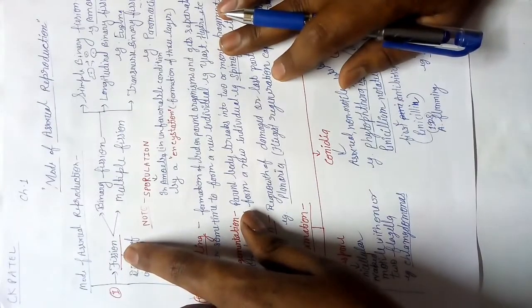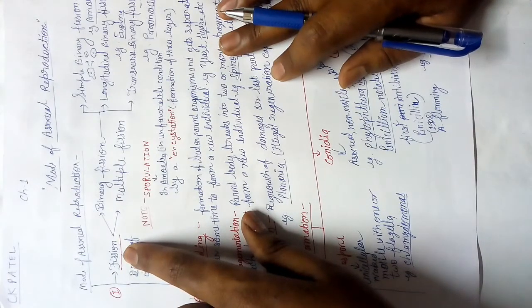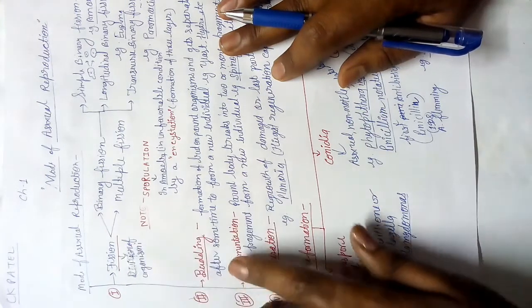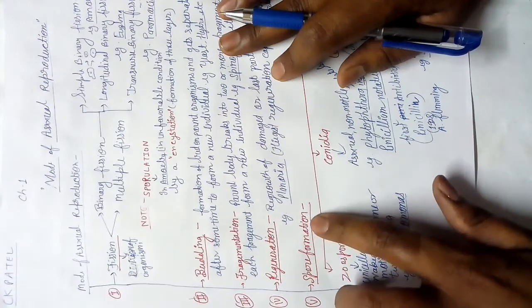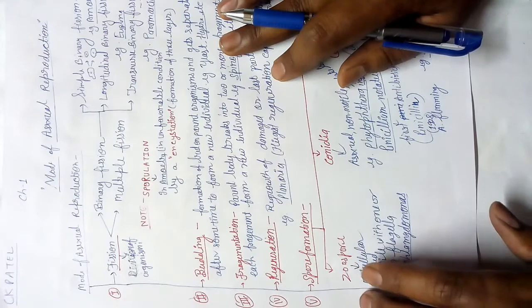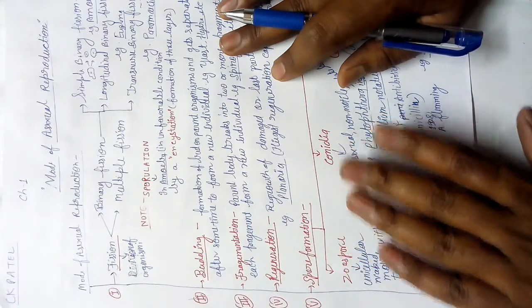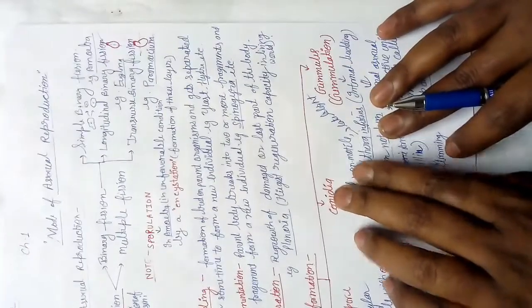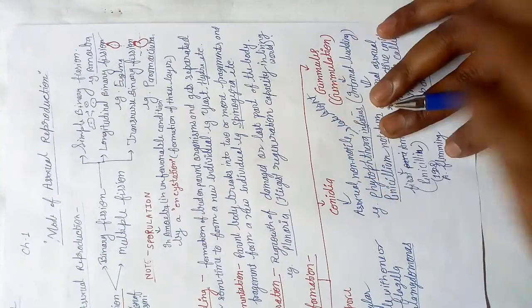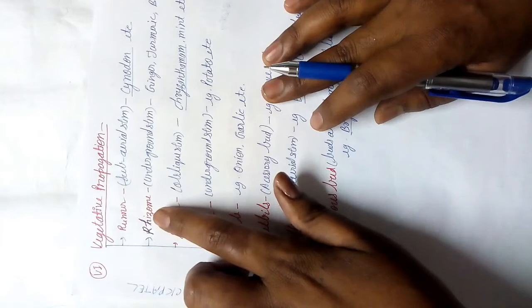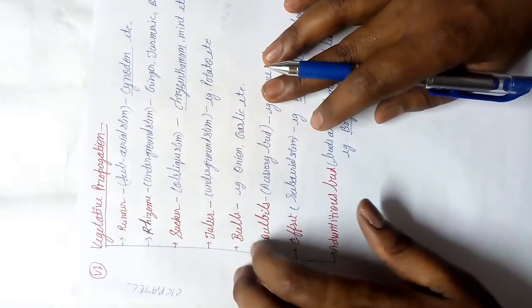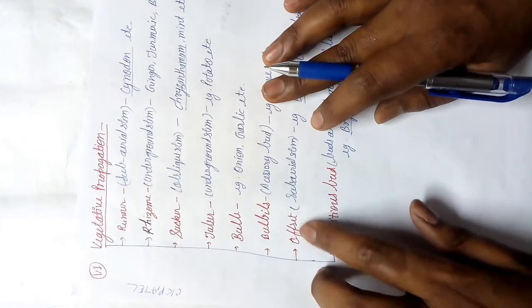The modes of asexual reproduction are: fission, budding, fragmentation, regeneration, and spore formation — which is of three types: zoospore, conidia, and gemmules (by a process called gemmulation). The next mode is vegetative propagation: runner, rhizome, sucker, tuber, bulb, offset, and adventitious bud.